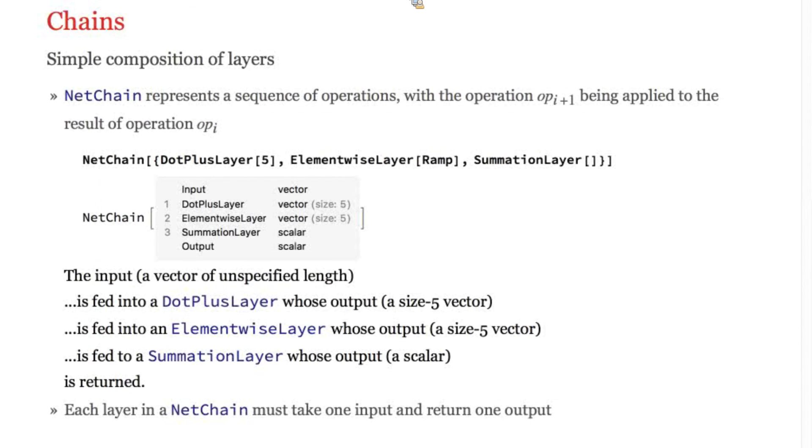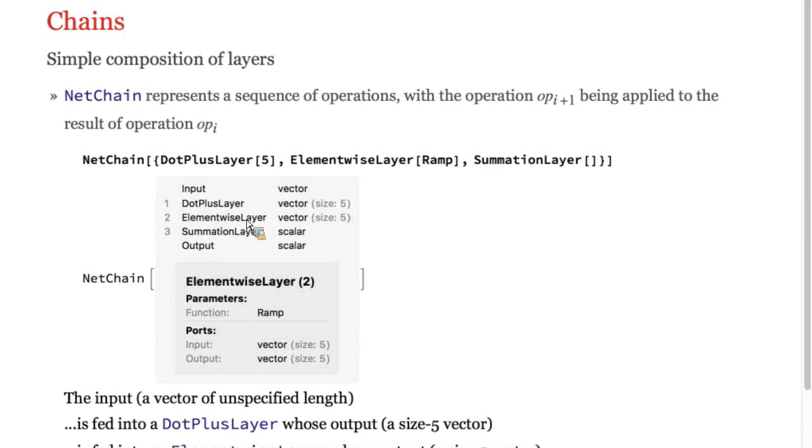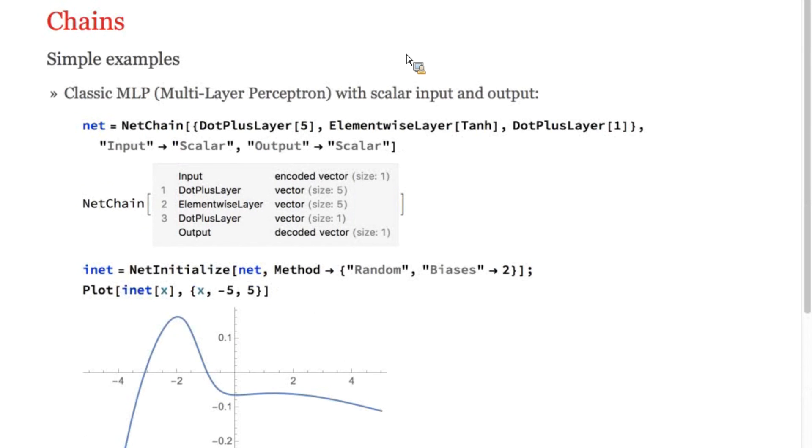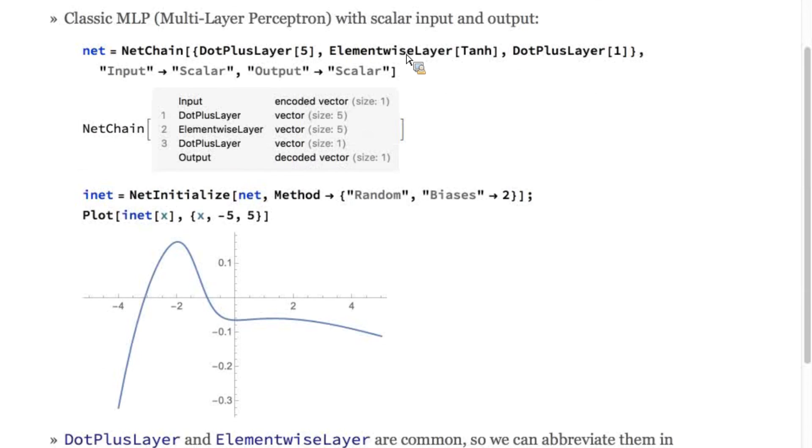The simplest way to build a net is to chain together several layers so that the output of each layer is used as the input of the next. Net chain lets you express this pattern. Once you've built a net chain, you can probe the individual layers interactively.